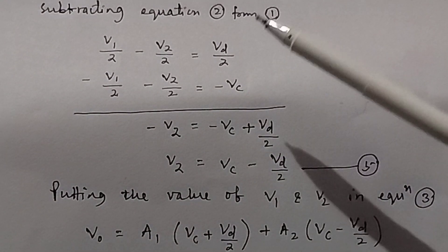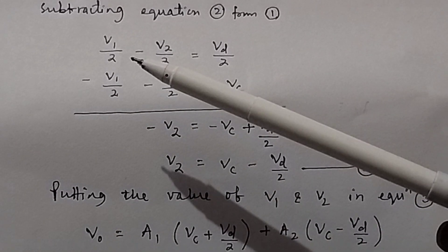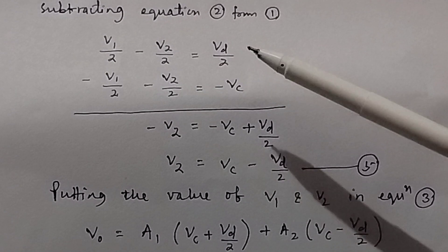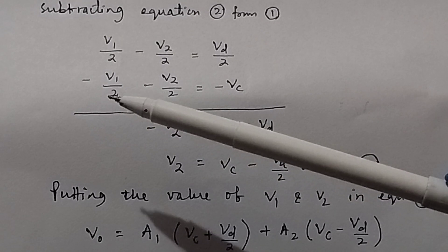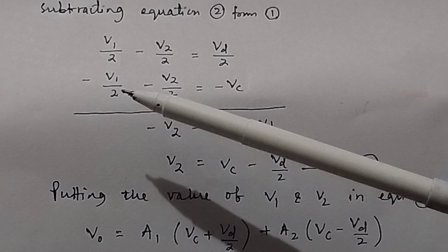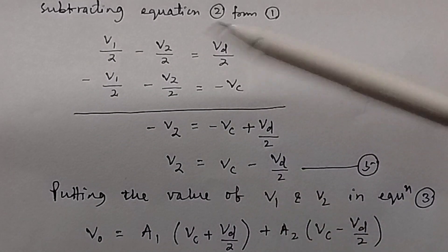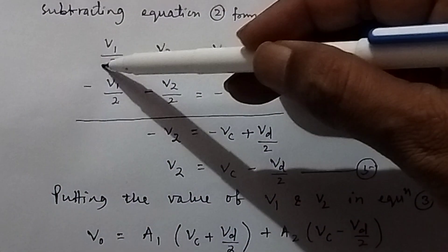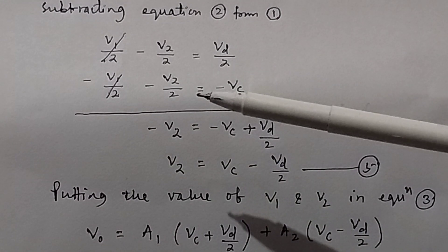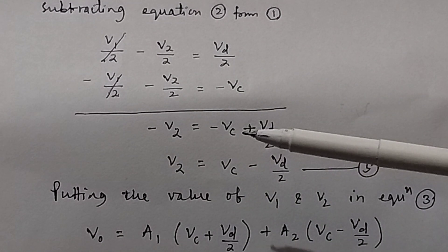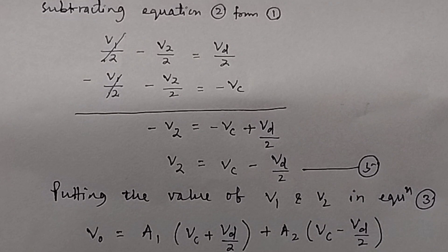Subtracting equation 2 from equation 1: V1/2 minus V2/2 = Vd/2, and subtracting gives minus V1/2 minus V2/2 = minus Vc. The V1 terms cancel, leaving minus V2 minus V2/2, so minus V2 = minus Vc plus Vd/2, which gives V2 = Vc minus Vd/2. This is equation 5.